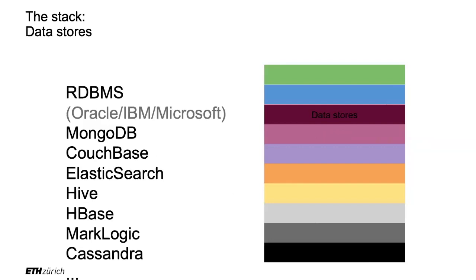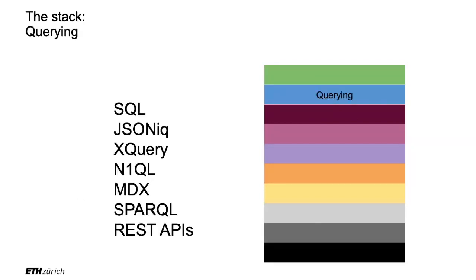There are also data stores — basically like a mini database system, not quite a full-fledged one with ACID guarantees and a high-level language. It's a mini version that might have an API rather than a query language and might not be fully ACID. Then there's the querying layer that makes it a true database system: SQL, JSONiq, XQuery for XML, MDX for cubes, SPARQL for graphs.